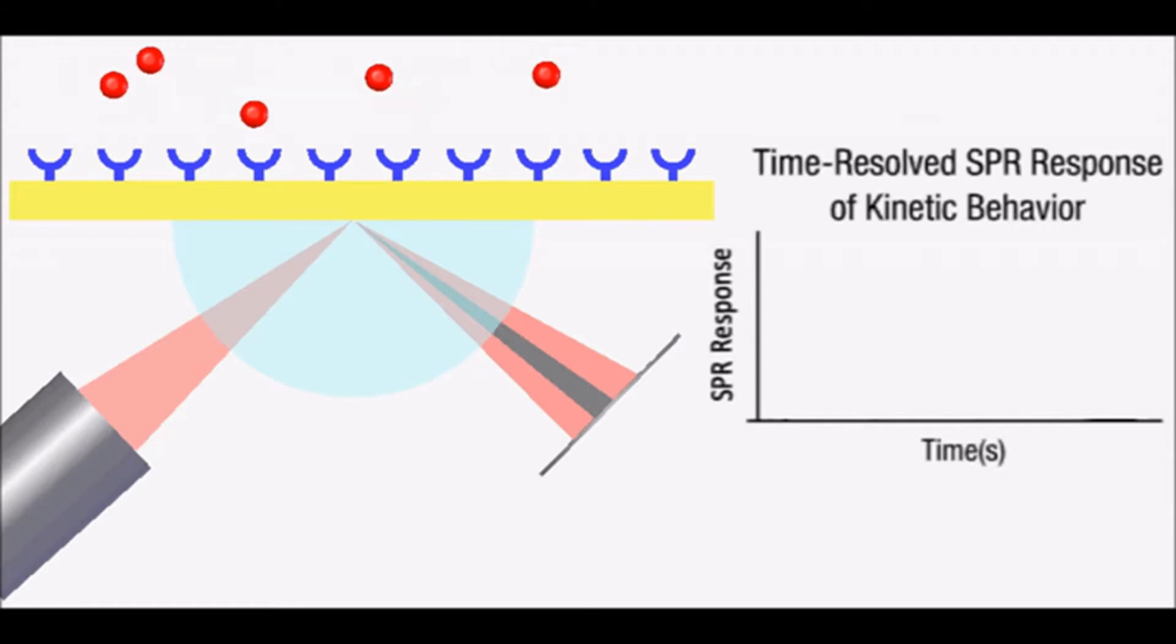Initially, there are many binding sites available, resulting in a rapid increase in SPR response that occurs as analyte begins to bind to ligand. While sample is continuously delivered to sensor surface, analyte molecules continue to bind and number of binding sites decrease corresponding to decrease in binding rate.